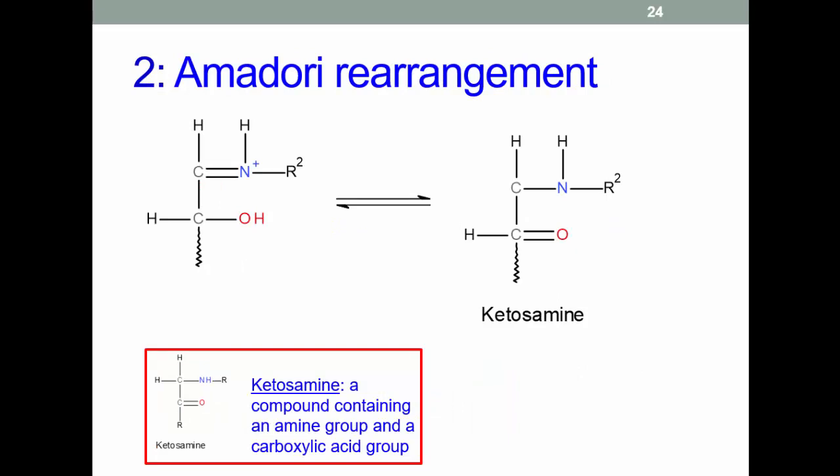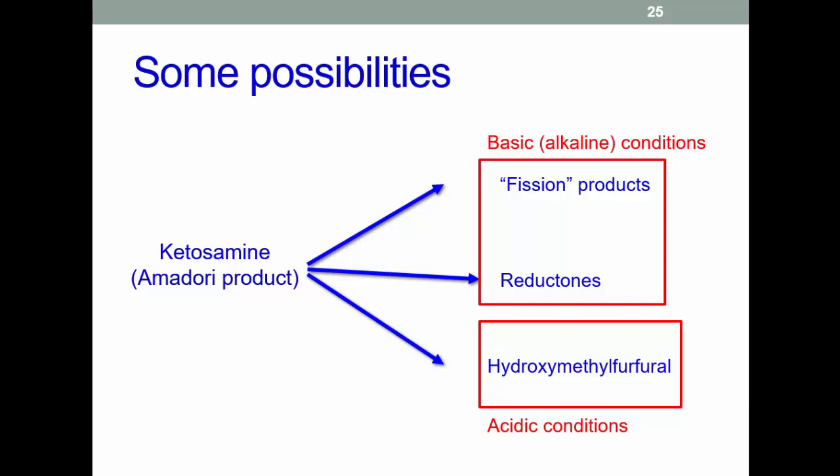The Schiff base rapidly breaks down to form something called a ketosamine — a compound containing both an amino group (–NH) and a carbonyl group. It's also not very stable and will undergo a wide range of further reactions. This step is one of the main reasons why the Maillard reaction produces so many complex flavors and colors. The ketosamine can also fragment, producing products including acetaldehyde, diacetyl, and pyruvaldehyde — all reactive molecules that undergo many further reactions, adding to the complexity of the process.